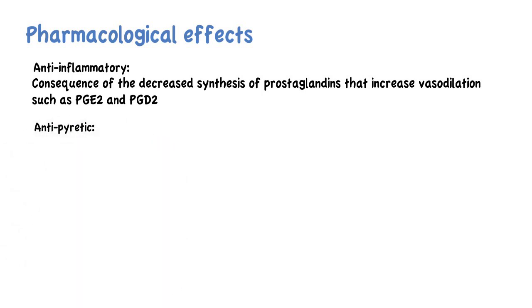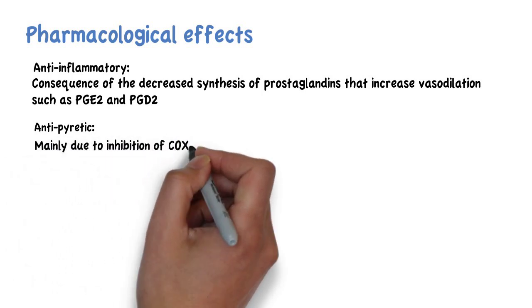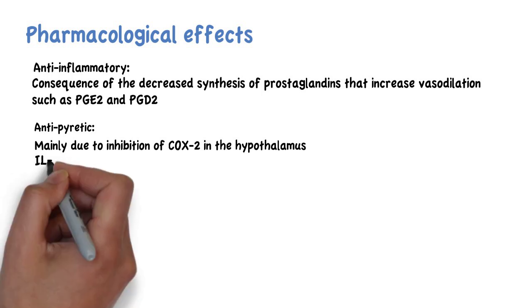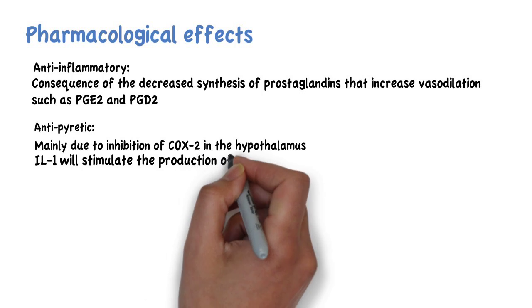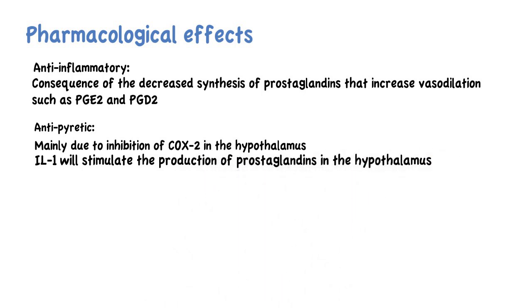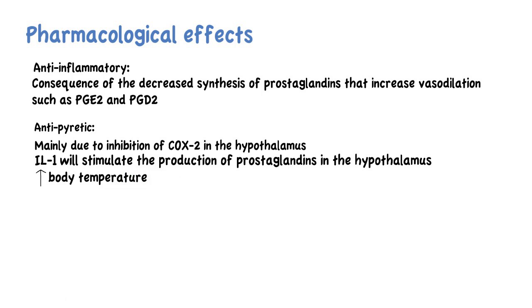The antipyretic actions of NSAIDs are mainly due to the inhibition of COX-2 in the hypothalamus. Inflammatory cytokines such as interleukin-1 will stimulate the production of prostaglandins in the hypothalamus, and this will elevate body temperature. So if COX-2 is inhibited, there is no production of prostaglandins and therefore no fever.